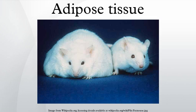Adipose tissue is derived from preadipocytes. Its main role is to store energy in the form of lipids, although it also cushions and insulates the body. Far from hormonally inert, adipose tissue has, in recent years, been recognized as a major endocrine organ, as it produces hormones such as leptin, estrogen, resistin, and the cytokine TNF-alpha. Moreover, adipose tissue can affect other organ systems of the body and may lead to disease.